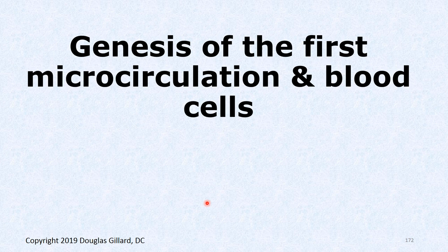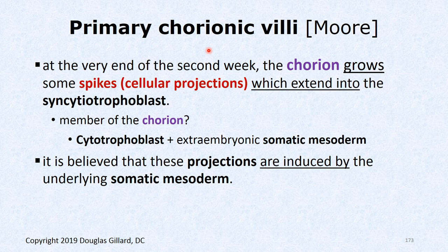Finally, the genesis of the first microcirculation and blood cells. At the very end of the second week, the chorion — cytotrophoblast plus extra embryonic somatic mesoderm — starts poking out little finger-like or tooth-like projections, believed to be induced by the somatic mesoderm through transcription factor signaling. When these projections first form, they are called primary chorionic villi.